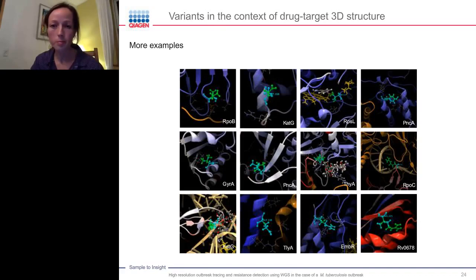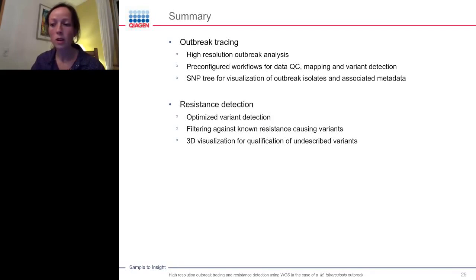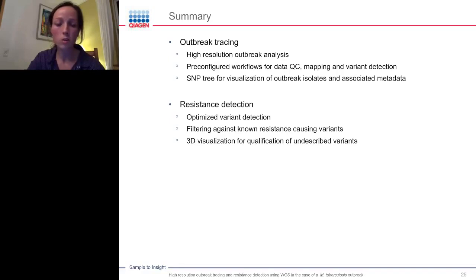To sum up, with this study we have shown how to use tools in Chiagen Microbial Genomics ProSuite for high-resolution outbreak tracing by analyzing whole genome sequencing data. Our pre-configured workflows for data QC, mapping, and variant detection allow you to get started easily. Our optimized variant detection and database comparison tools enable user-friendly detection of antimicrobial resistance-causing variants, and our tools for 3D visualization can assist in qualifying previously undescribed variants. Thank you for your attention.